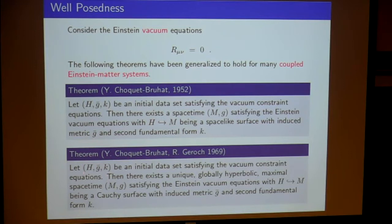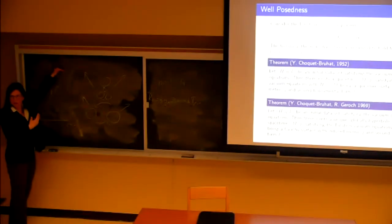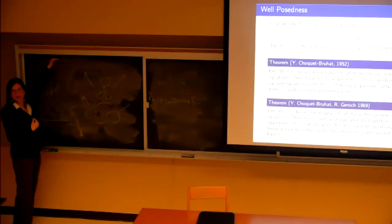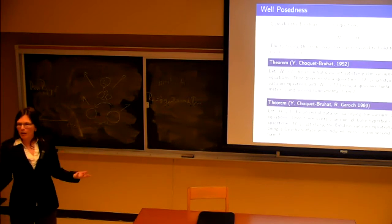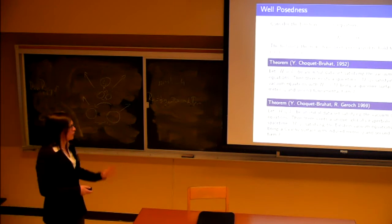Together with Geroch, she showed that the same type of initial data gives a unique, globally hyperbolic, maximal space-time solving the Einstein equations. Of course, singularities and stability are not given by this — those have to be addressed separately. Questions arise: if the second fundamental form K goes to zero fast enough spatially, does the metric approach the Euclidean Minkowski metric far from the source? Yes — this is the asymptotic flatness picture: locally the metric and curvature do all kinds of things, but when you go very far out, things approach Minkowski far away from the source.